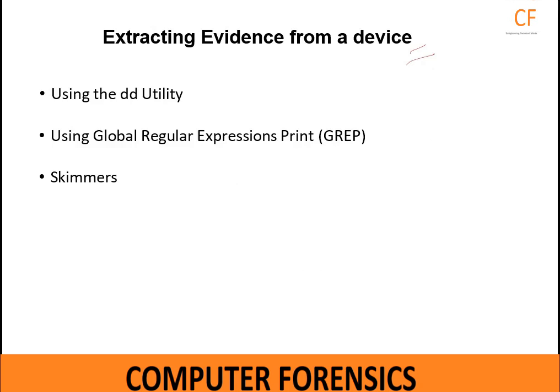Investigators use three primary methods to extract evidence from a device. The first method involves using a hardware device such as Dolan Forensics Hard Disk Tracker. The second method involves using vendor software such as FTK or NCAS. Finally, another method involves using a command line interface running Linux commands to acquire, search, and filter evidence. Professional tools such as NCAS are expensive, so we will look at the DD utility, which is free and accepted in the courtroom, followed by Global Regular Expression Print (GREP) and skimmers.